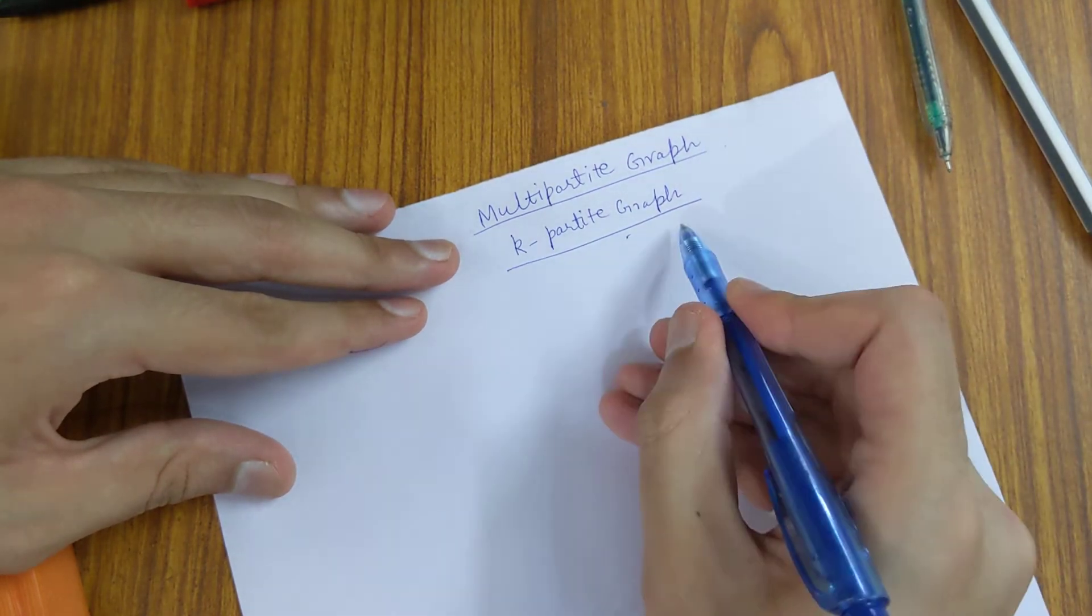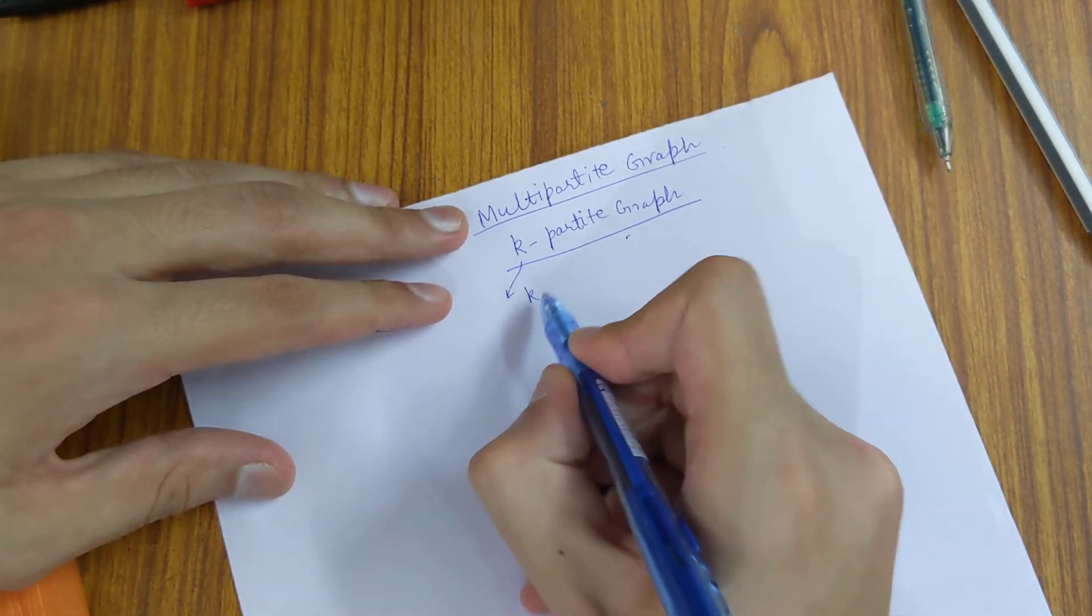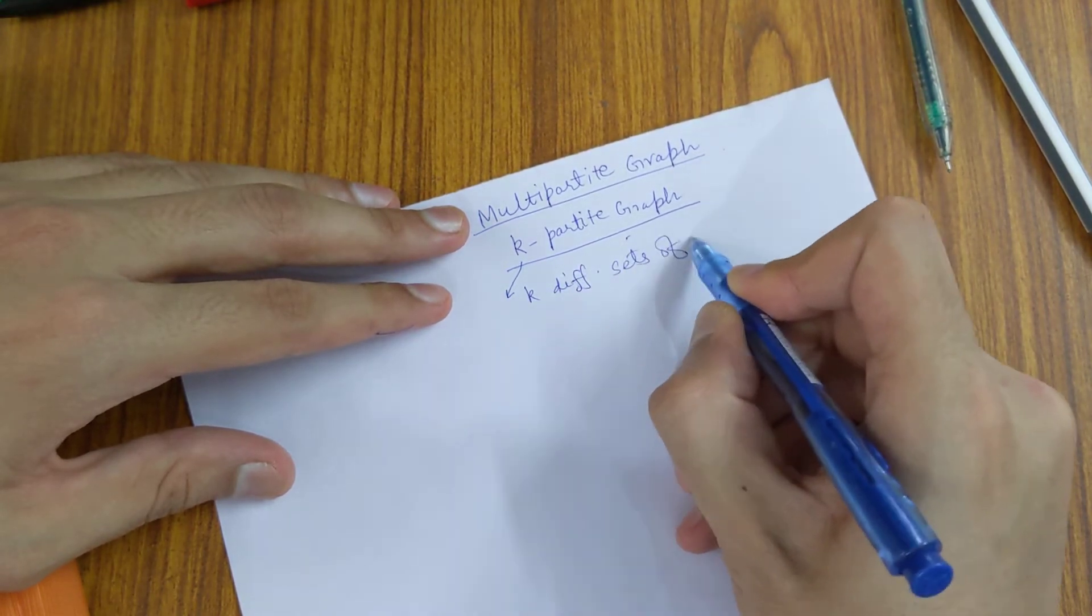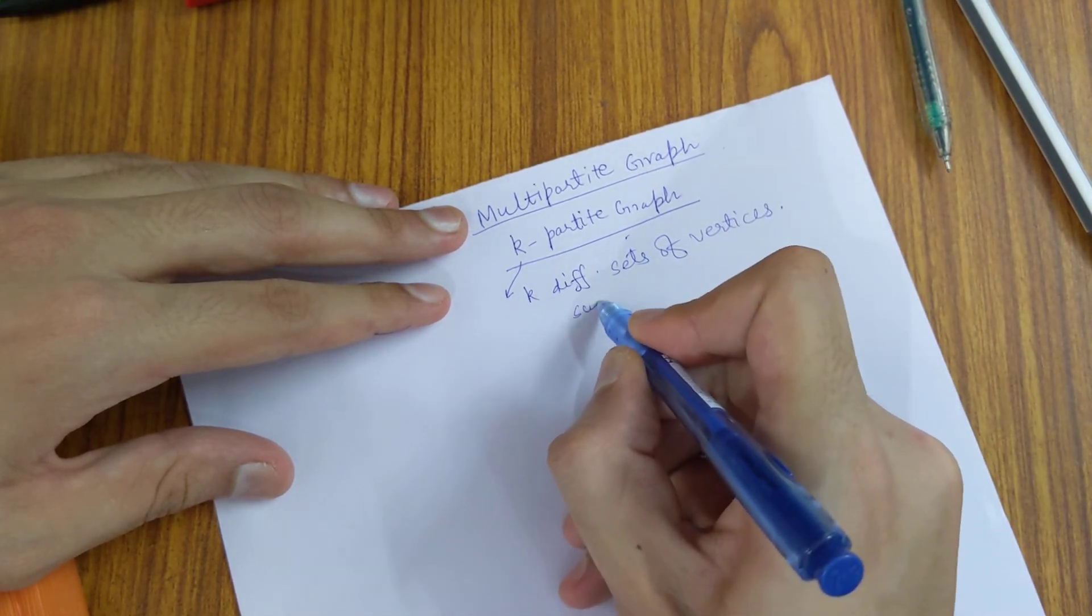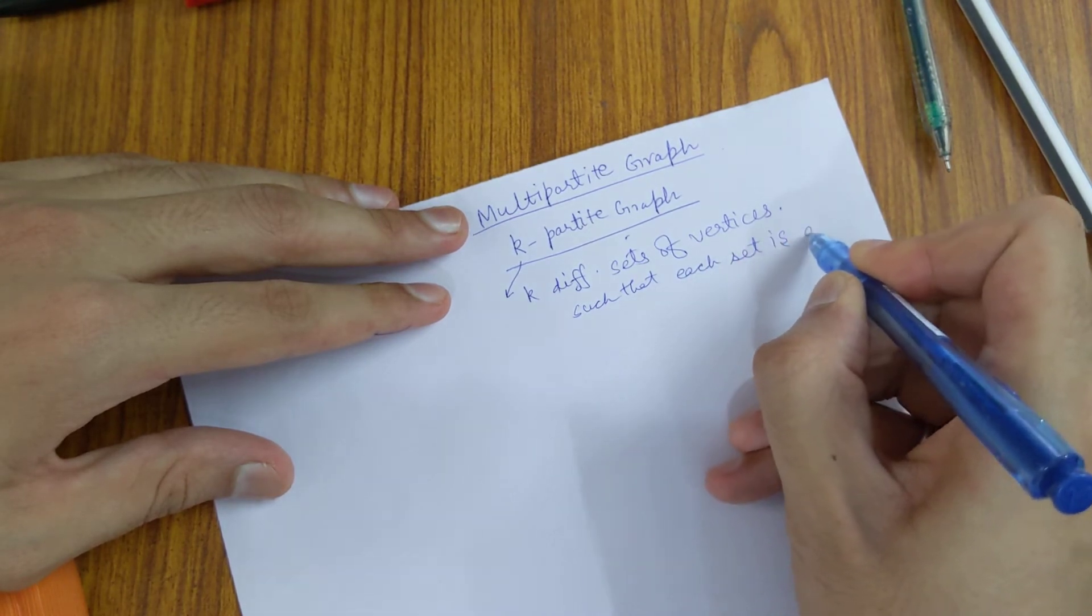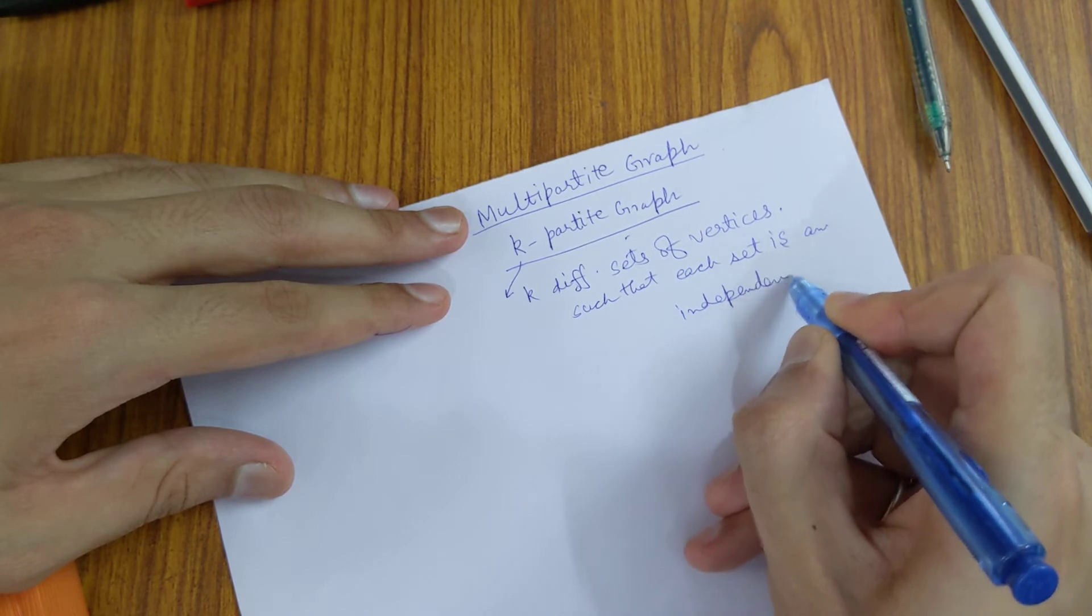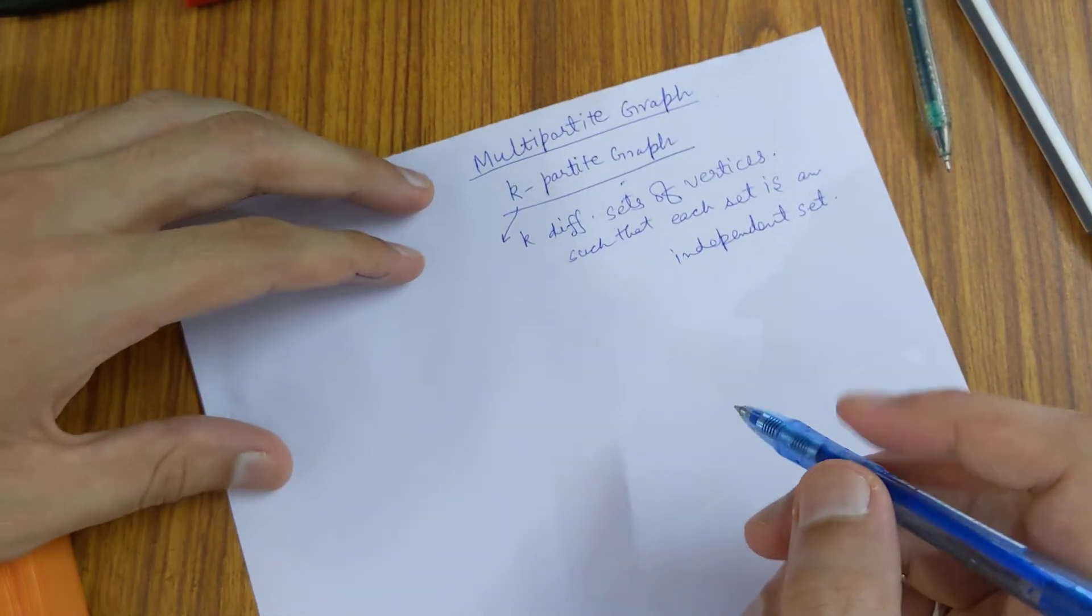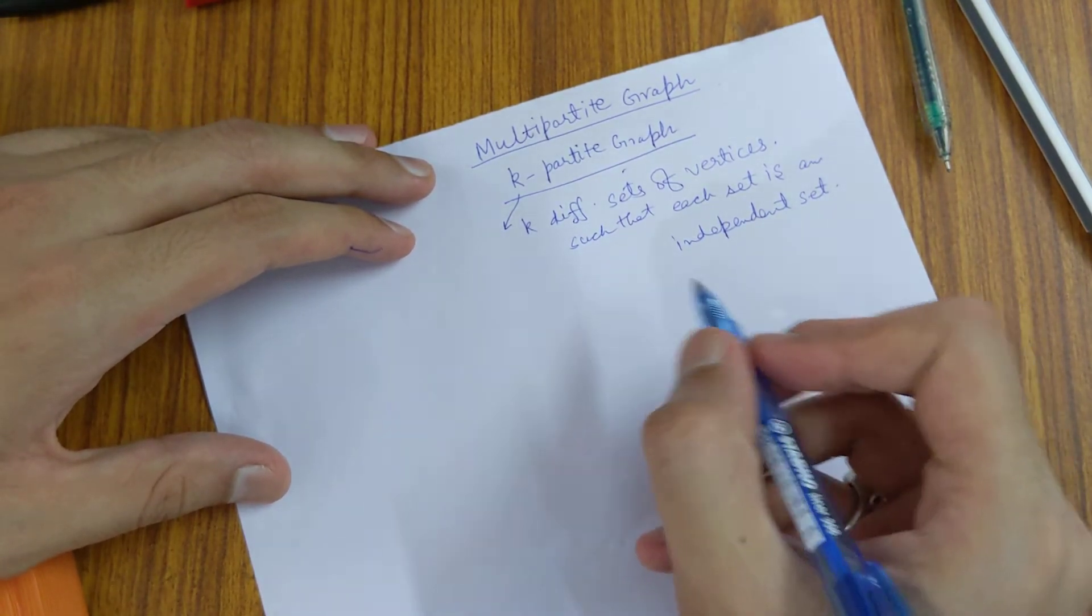A k-partite graph is one which can be partitioned into k different sets of vertices such that each set is an independent set. An independent set of vertices in a graph is one which has no two vertices adjacent.